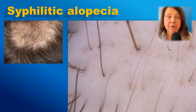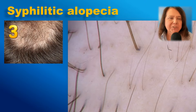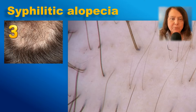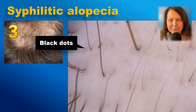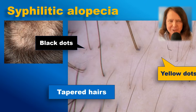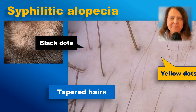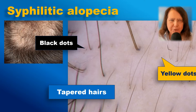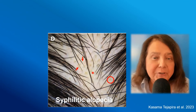Image number 3 is showing syphilitic alopecia. We will see some black dots, some yellow dots, but also some tapered hairs. This image is very similar to alopecia areata in trichoscopy.